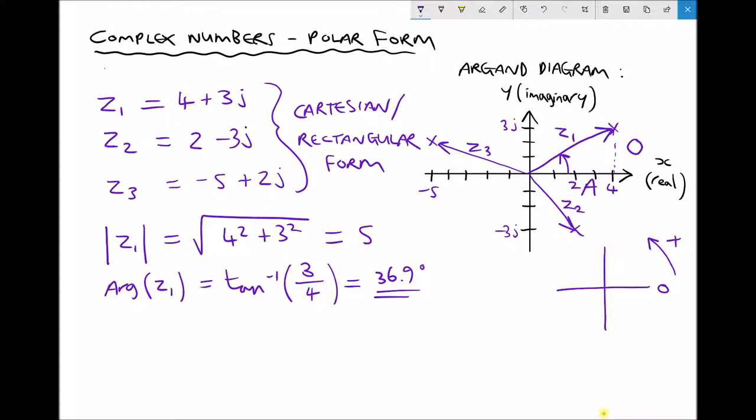Let's repeat that for Z2. The modulus of Z2 equals the square root of 2 squared plus minus 3 squared all square rooted. Remember the square of a negative number just gives us a positive number so in effect we have 2 squared plus 3 squared all square rooted, and that comes out to be 3.61 to two decimal places.